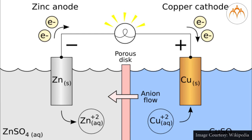The chemical processes of solution and deposition at the electrodes can proceed and will continue to maintain a potential difference between the electrodes until the chemicals are exhausted. Energy supplied to the external circuit comes at the expense of the energy of the system of electrodes and electrolytes.